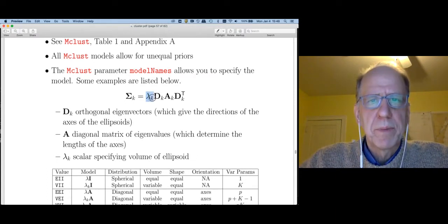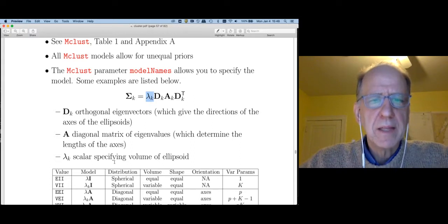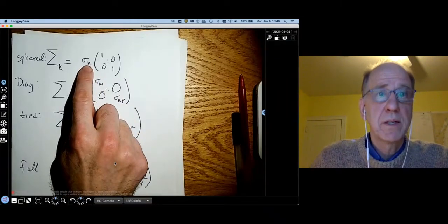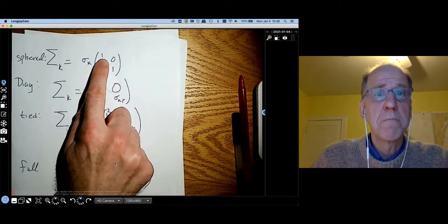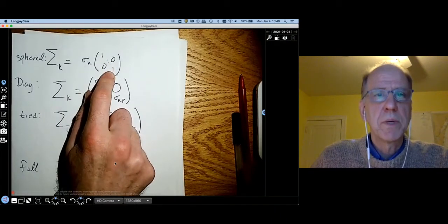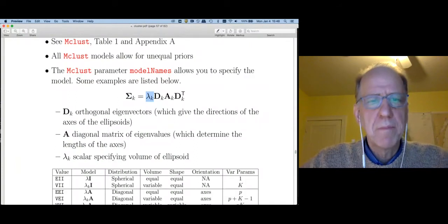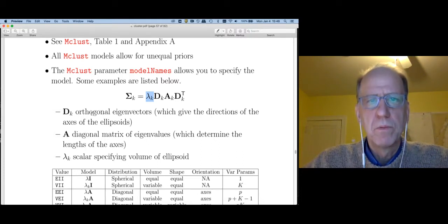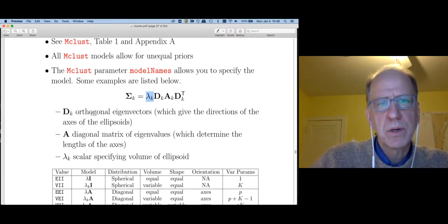mclust uses an eigendecomposition of the covariance matrix. We're going to talk a lot more about this eigendecomposition when we get to the dimensionality reduction section. Think of lambda sub k as a scaling factor. In the Python example, I use sigma sub k as the scaling factor that said how big the variances are going to be across the board. mclust is going to use lambda sub k for that.